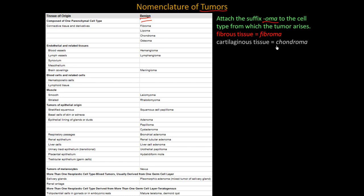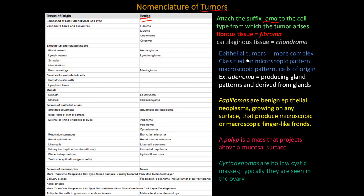A chondroma would be a benign tumor from the cartilaginous tissue. Epithelial tumors are a little more complex in their naming. They're classified on the microscopic pattern, macroscopic pattern, and cells of origin. For example, you have an adenoma, which produces gland patterns or is derived from glands. An adenoma refers to cells that when they replicate form glandular patterns, or they are derived from a specific type of gland.